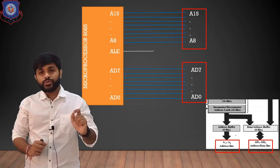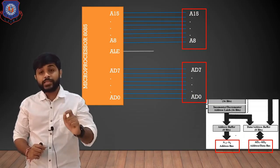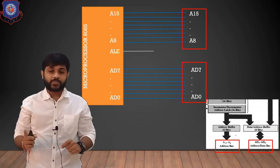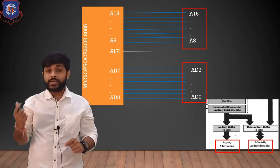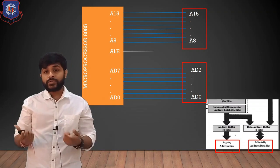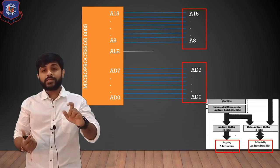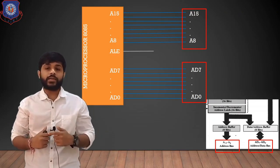If I want to use the data bus, then I have to convert this AD0 to AD7 into D0 to D7. When you convert AD0 to AD7 to D0 to D7, the processor will use this lower-order bus as a data bus and can send and receive data.